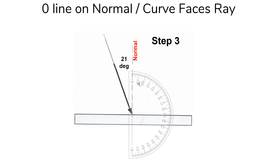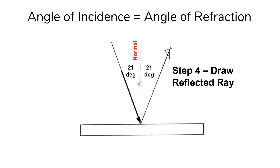To draw the reflected angle, we point the curve of the protractor to the right, the zero line on the normal, and the center of the protractor on the intersection point. When you draw your reflection angles correctly, they form the letter V.